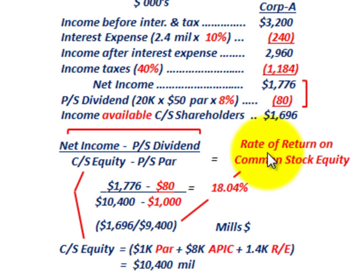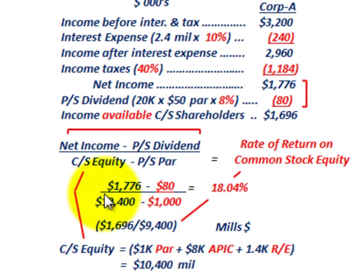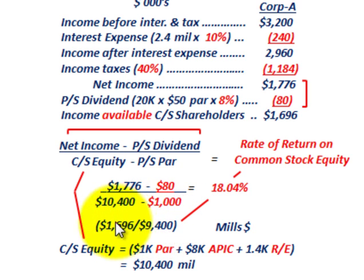That gives us our rate of return on common stock equity of 18.04%. Looking at that again: we have $1,696,000 in net income available to common shareholders, divided by common stock equity of $10,400,000 less the preferred stock par value of $1,000,000, giving us $9,400,000 in the denominator. Dividing $1,696,000 by $9,400,000 gives us the rate of return on common stock equity.